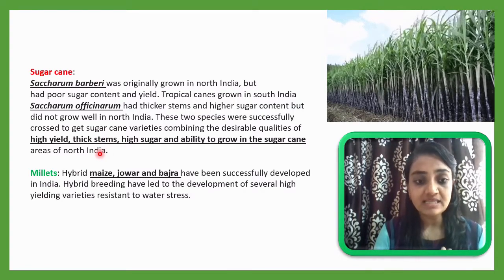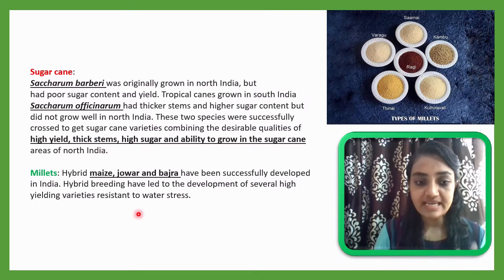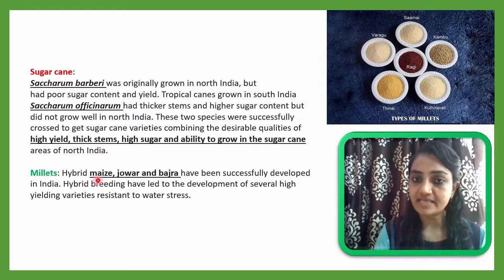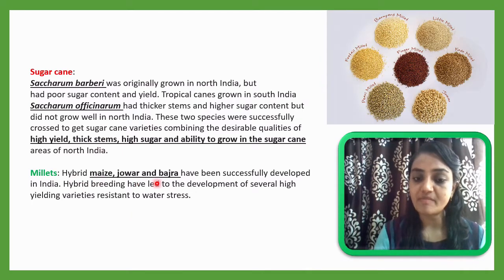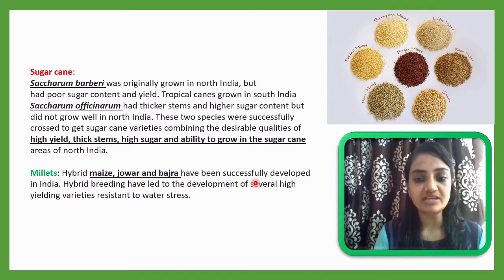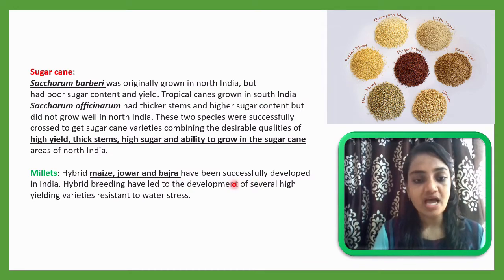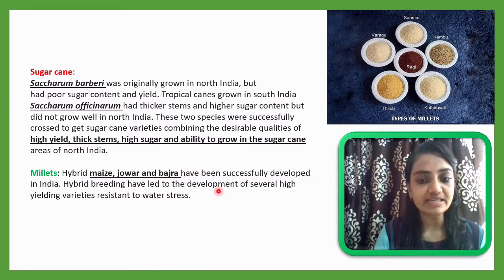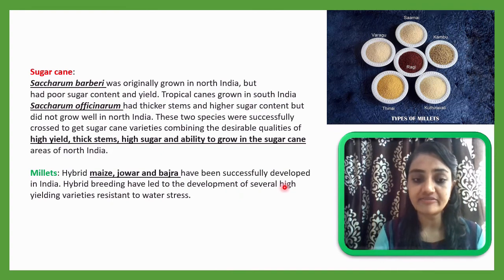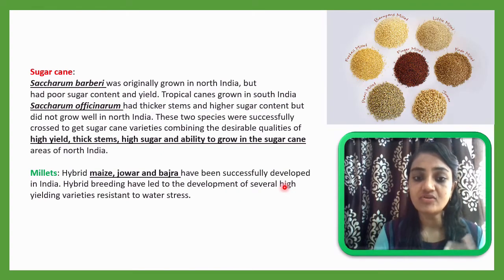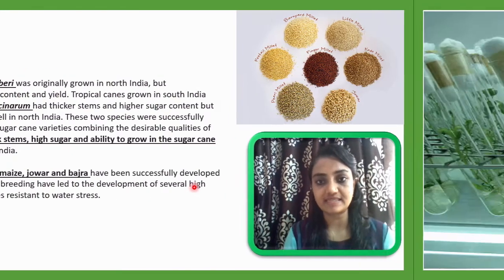The next crop is millet, including maize, jowar, and bajra, which have been successfully developed in India. Hybrid breeding has led to the development of several high-yielding varieties with resistance to water stress.